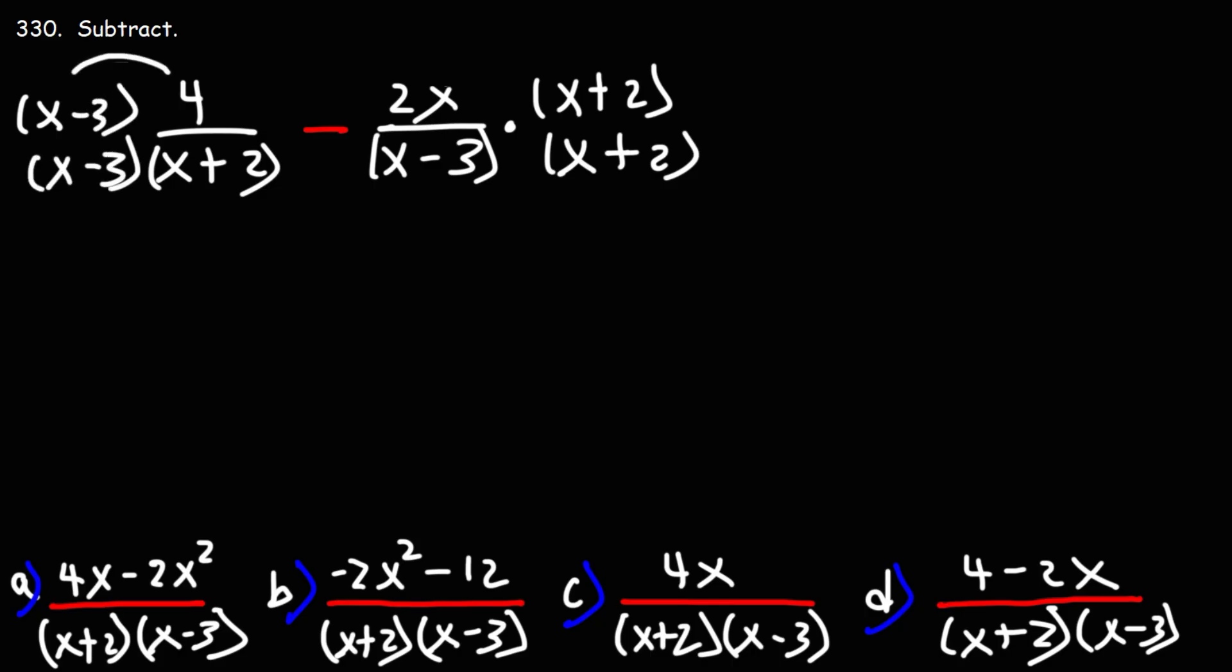So let's distribute. Here I have 4x. Negative 3 times 4 is negative 12. And I have a common denominator of x minus 3 and x plus 2.